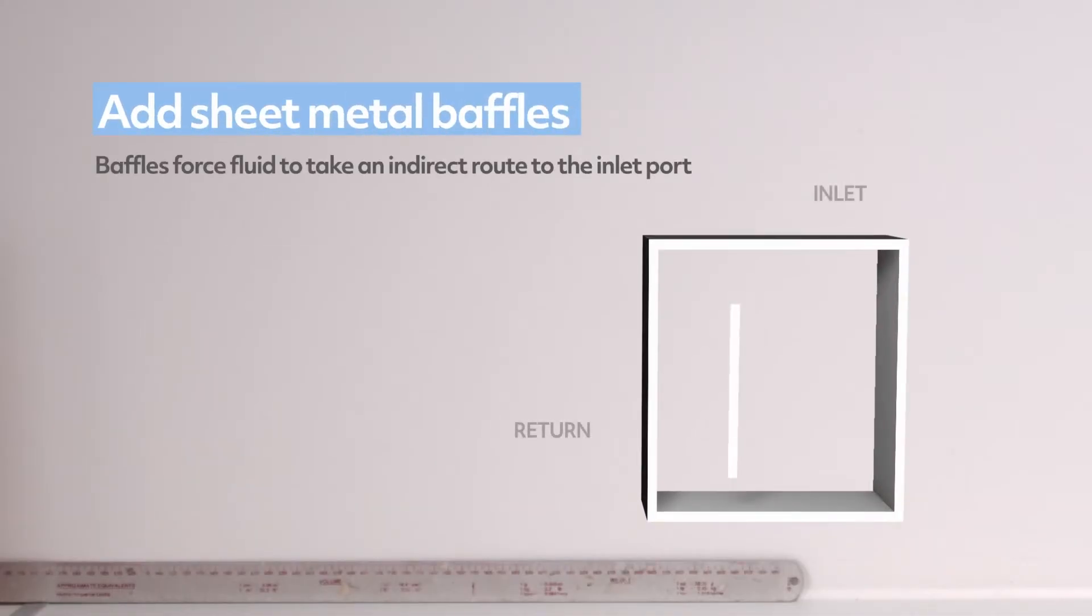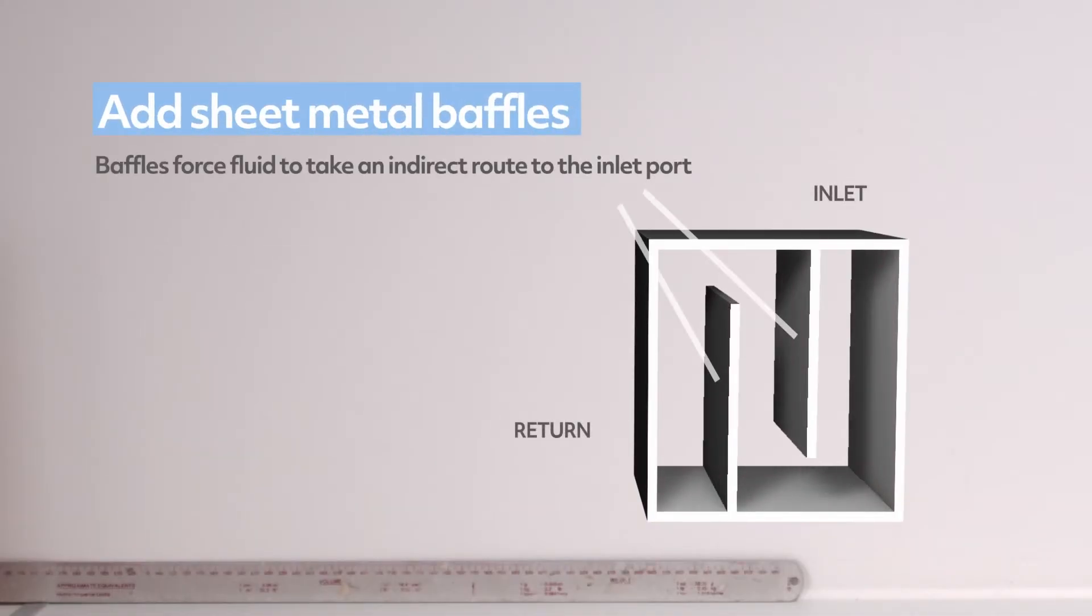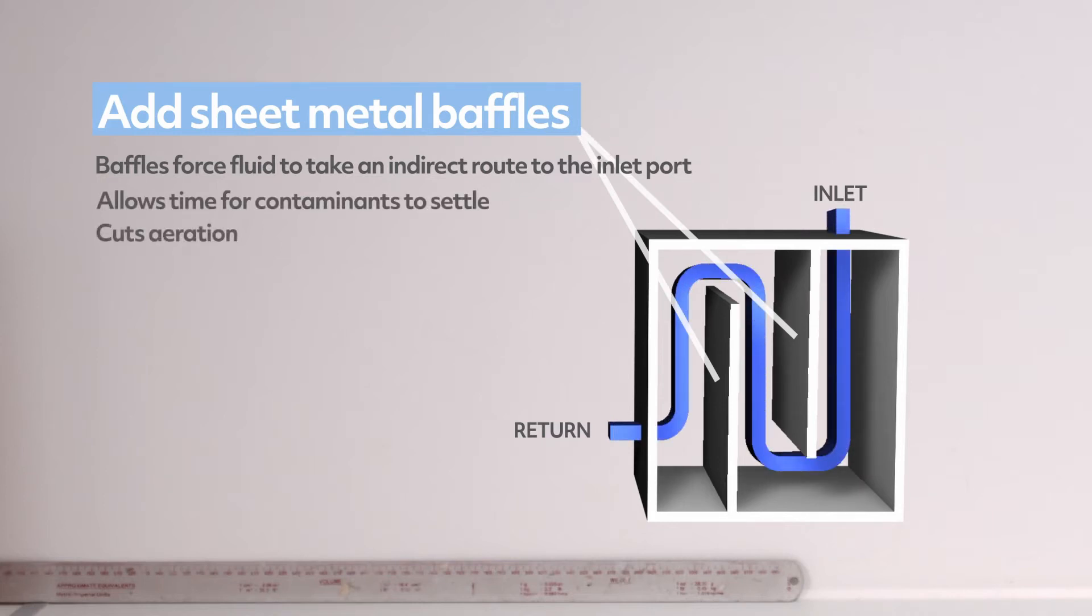Adding sheet metal baffles will force fluid to take an indirect route to the inlet port, allowing time for contaminants and particles to settle, cuts aeration, gives better cooling and lowers the strain on mountings.